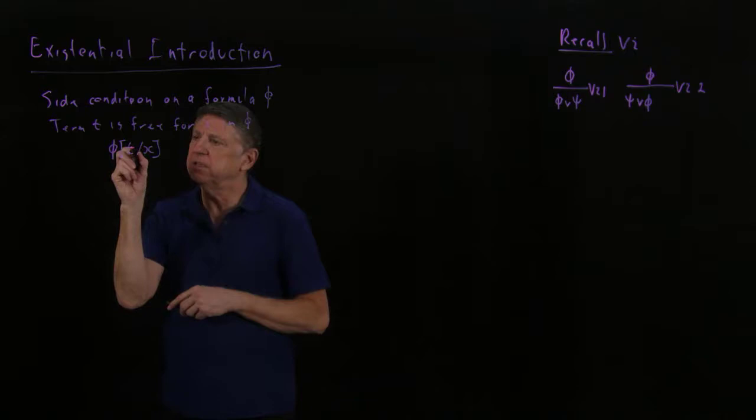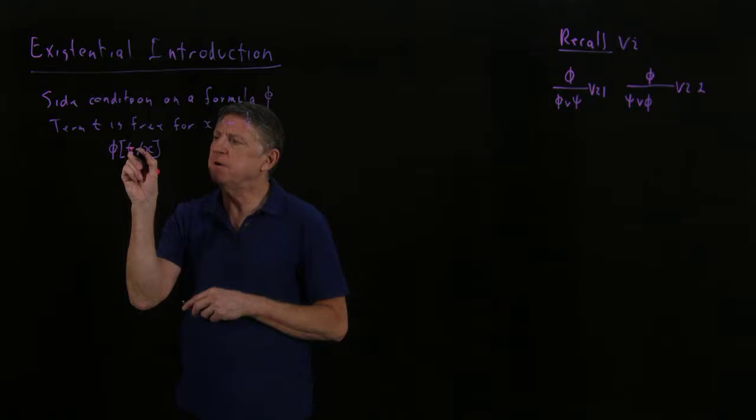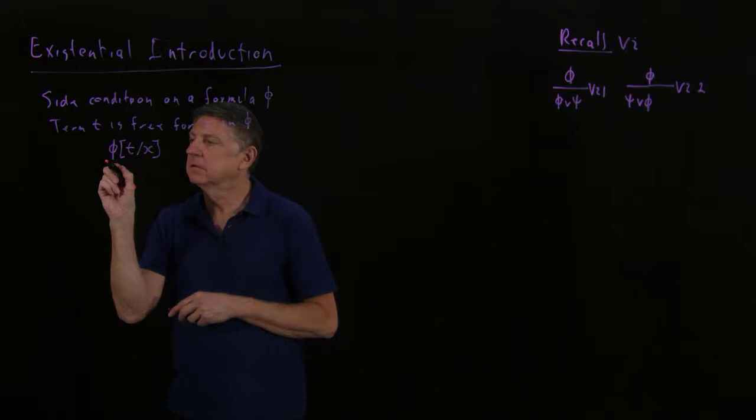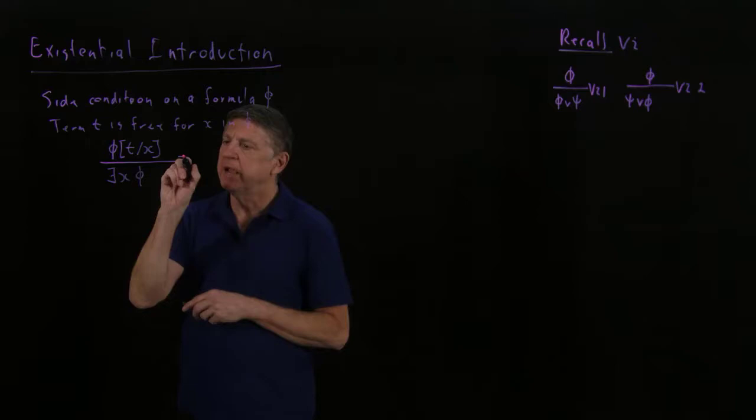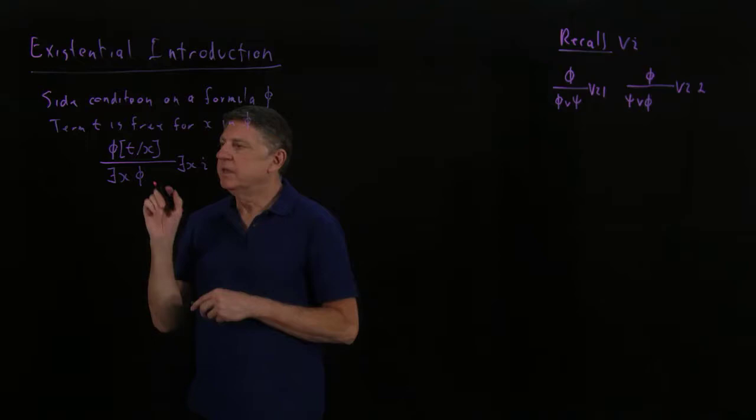So let's just think of it as if this term is, for example, a fresh variable. If that fresh variable is substituted into the formula and it doesn't become bound, then if that formula is on a line of its own, we can conclude that something in the universe satisfies that formula. And that's our existential introduction.